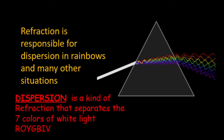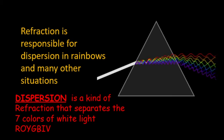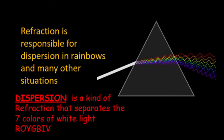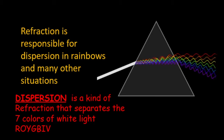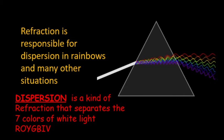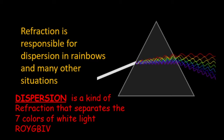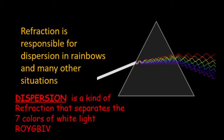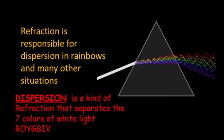Dispersion is a kind of refraction that separates the seven colors of white light — ROYGBIV. As light passes through a prism, it is bent or refracted by the angles and plane faces of the prism, and each wavelength of light is refracted by a slightly different amount. A ray of white light passing through a prism is dispersed into the visible spectrum of red, orange, yellow, green, blue, indigo, and violet.